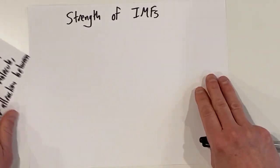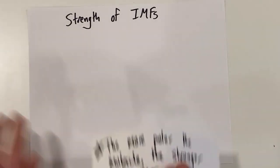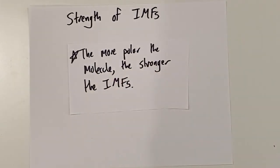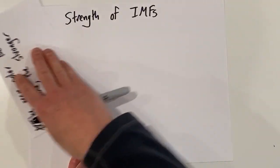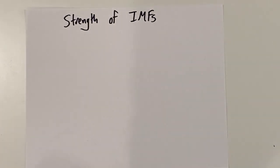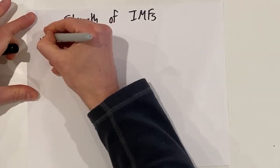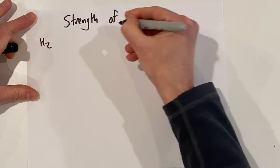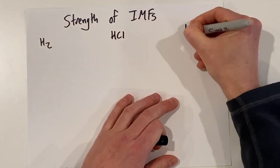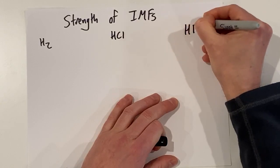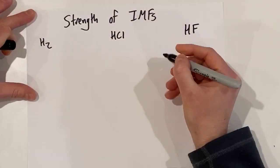So we can say: the more polar the molecule, the stronger the intermolecular forces. Let's examine this for three molecules: H₂, HCl, and HF. We'll draw their Lewis dot diagrams.